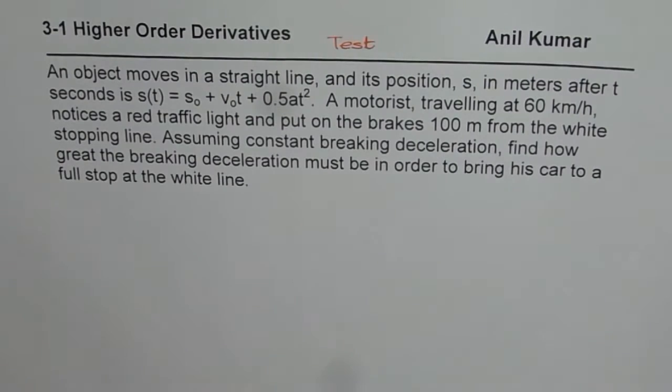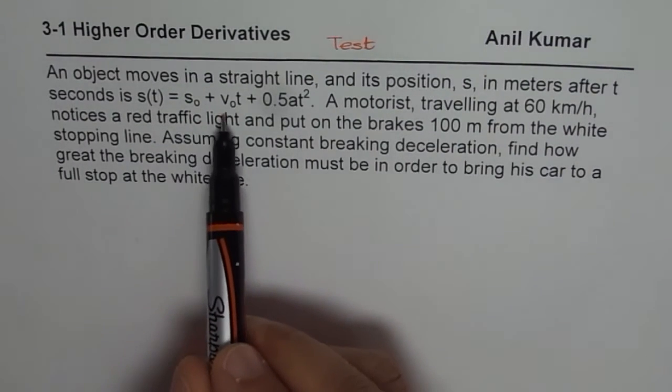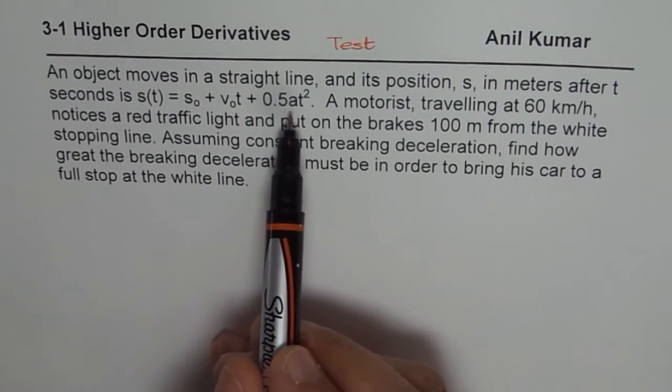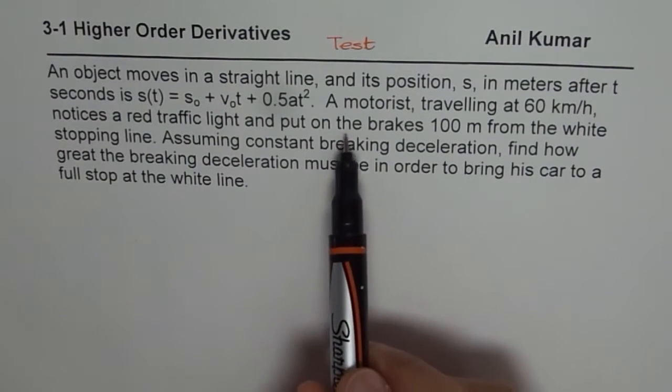The question here is, an object moves in a straight line and its position s in meters after t seconds is s(t) equals s₀ plus v₀t plus 0.5at². A motorist...